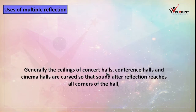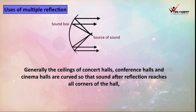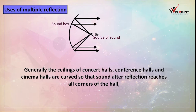Generally, the ceilings of concert halls, conference halls, and cinema halls are curved so that sound, after reflection, reaches all corners of the hall. From the source, sound will spread everywhere because of reflection from the curved ceiling. The sound strikes the curved ceiling, reflects, and reaches the listener, spreading throughout the hall.